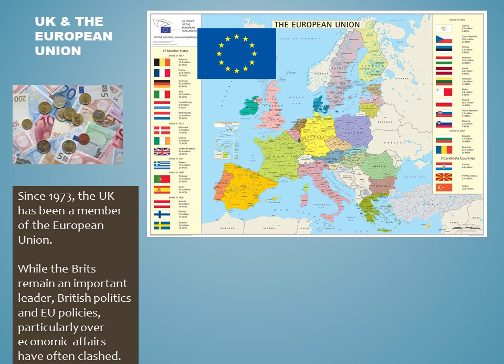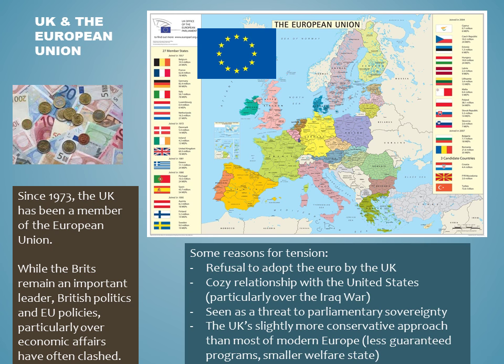In 1973, the United Kingdom joined the European Union in an effort to reduce trade barriers with its European allies. However, since that time, a series of events have taken place that have created friction between the UK and the European Union. Some of the reasons for this tension include the UK's refusal to adopt the euro, which is now the currency of all member states of the EU. The cozy relationship formed between the United Kingdom and the United States has also been an area of controversy, particularly under Tony Blair's new Labour government that agreed to support the U.S. efforts in the Iraq War.